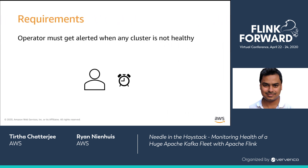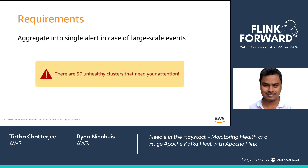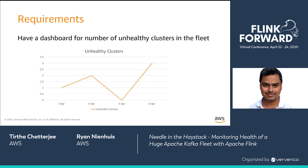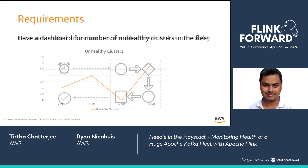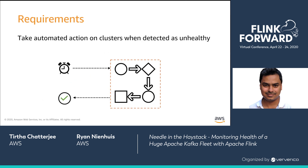What requirements do we have from the system? When a cluster becomes unhealthy and it cannot be remedied automatically, the operator should get alerted. We have learned at Amazon that during large scale events, one of the biggest sources of operator pain is a barrage of alerts for every individual resource. So we need the system to aggregate multiple unhealthy clusters into a single alert. Anyone who wants to check how well we are doing should be able to do so on a dashboard. The system should also be able to notify automated remediation workflows that will heal unhealthy clusters.